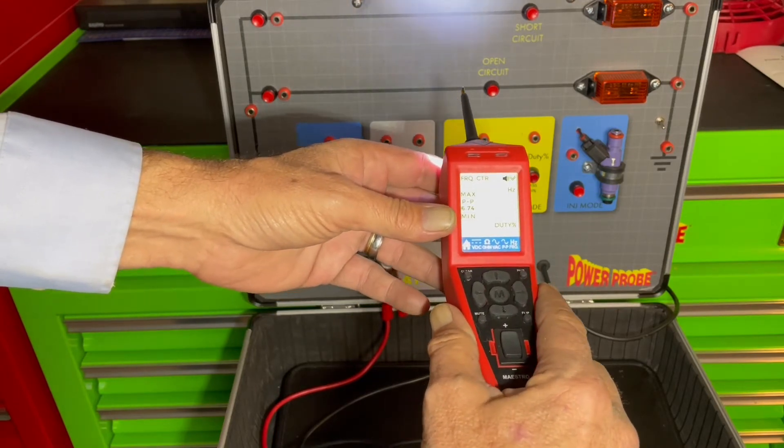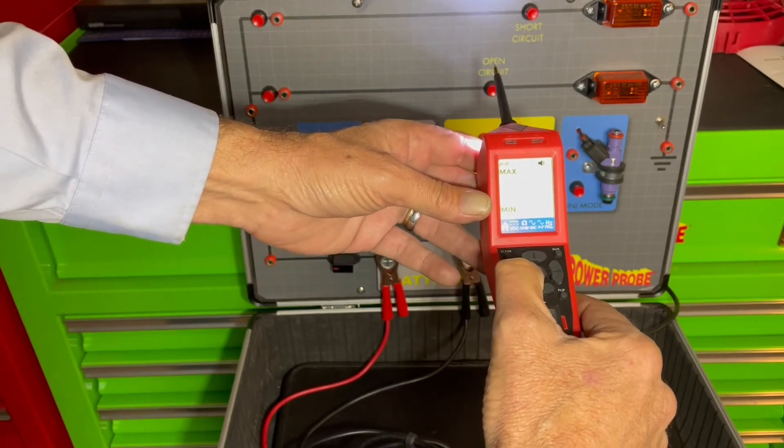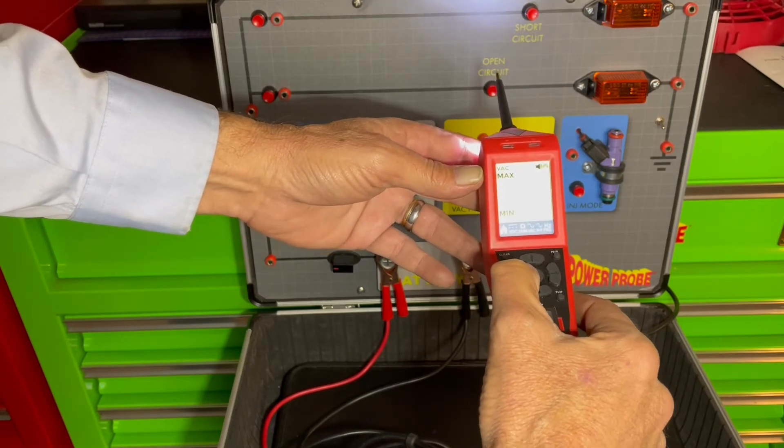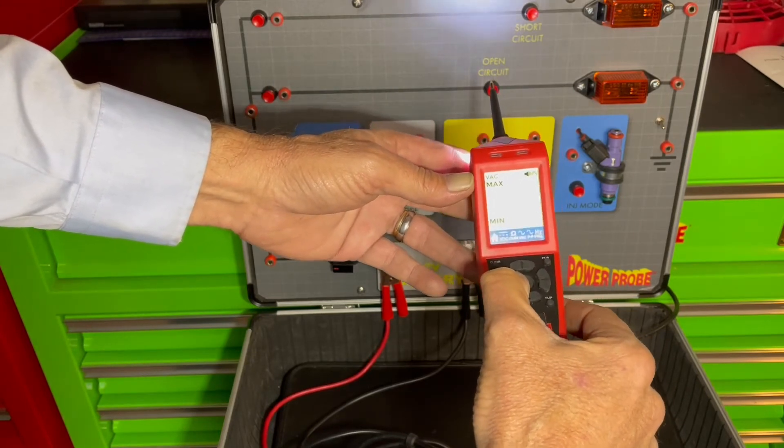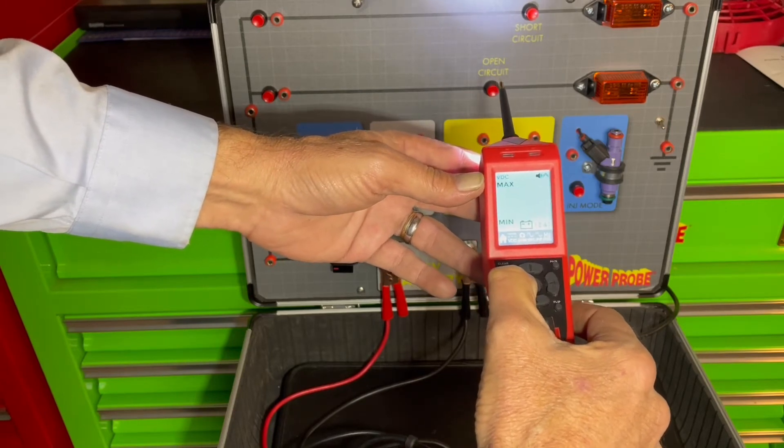So the Maestro gives you the ability, it's a graphing function that actually lets you observe the signal or waveform. That mode is available in hertz frequency, in voltage AC, it is in resistance, and DC voltage.